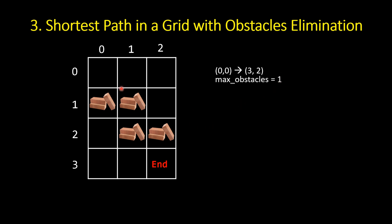For example, if we can remove just one obstacle, we go right, right, down, down, down to reach the end — a path length of 5. But if there are two obstacles blocking the path, there's no path achievable by removing just one obstacle, so you return -1.